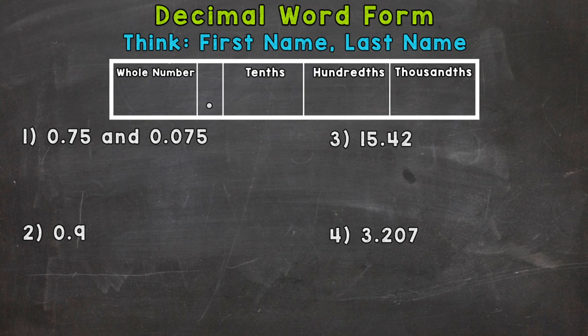We use that same hint or thought process when we wrote whole numbers in word form. It's going to look a little bit different when it comes to decimals, but it's going to be very helpful. So let's jump into number one here where we actually have two examples.